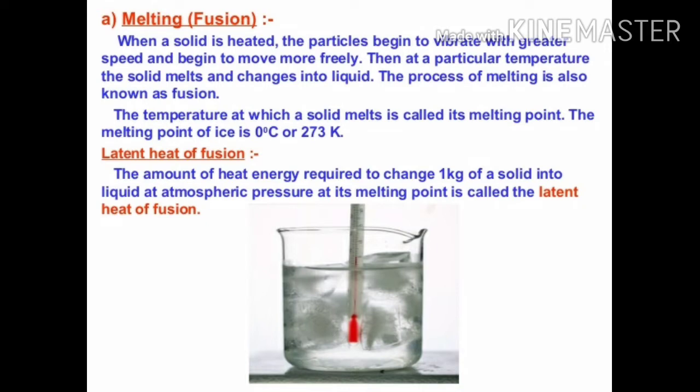Melting point is a point at which a solid starts converting into a liquid. The other name for melting point is fusion. Why is it happening? When we give heat to a solid, it will vibrate more and become free in a liquid way. All of this is happening because of kinetic energy — when we heat the solid, it increases the kinetic energy. And for doing that, we need latent heat. Latent heat is a hidden heat, meaning heat which is absorbed by the solid to get converted into a liquid. So for this, we use the term latent heat of fusion, because melting is known as fusion.